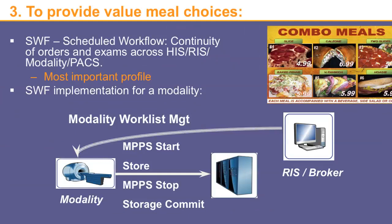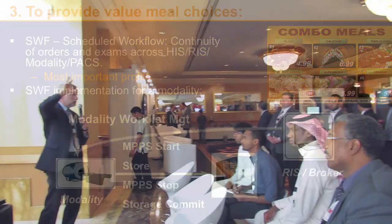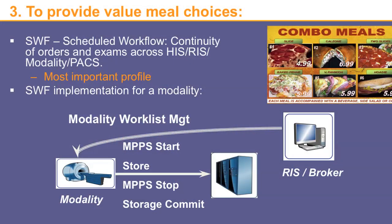The third benefit is to provide value meal choices. This is an analogy to show how you can pick and choose a set of functionality — a set of transactions — or what I call a value meal. Similar to ordering value meal number three at a fast food restaurant, in IHE you can say I want profile number three. For example, the scheduled workflow profile — SWF — provides continuity of orders and exams across HIS, RIS, modality, and PACS. It's actually one of the most important profiles.